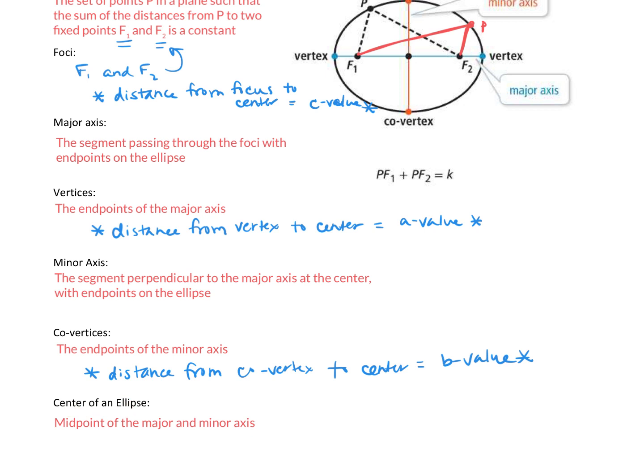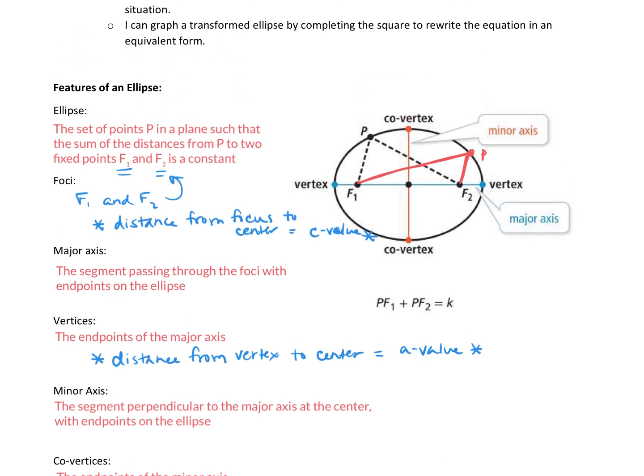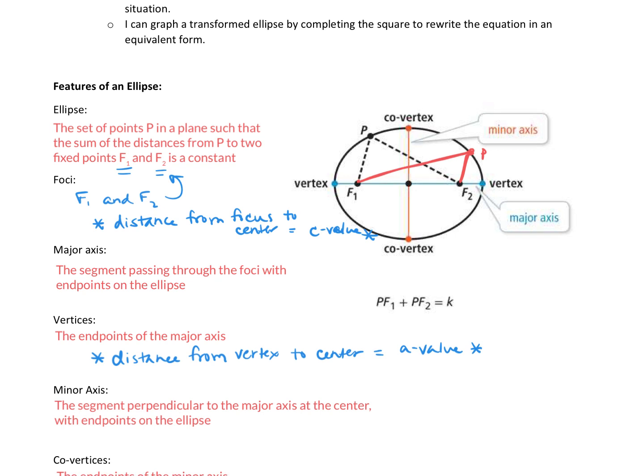Alright, the center of the ellipse, that is going to be the midpoint of the major and the minor axis. So it will be where they cross and it is the midpoint of each axis. So if we take a look at our picture, if this center right here is the midpoint, that means from the co-vertex to the center, co-vertex to the center, those are going to be the same measurement. Those are going to be the B value that we talked about. So B value is the distance from the co-vertex to the center.